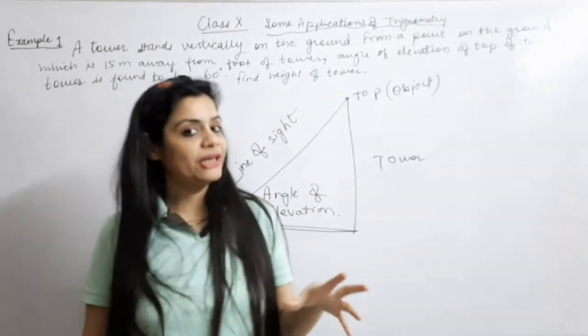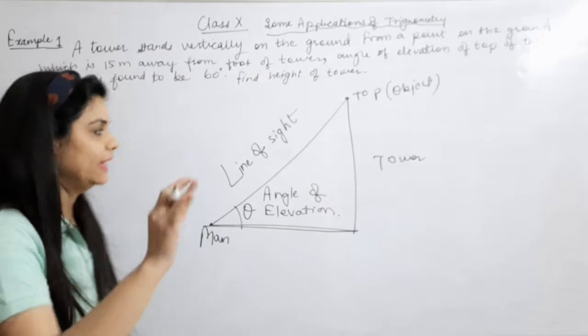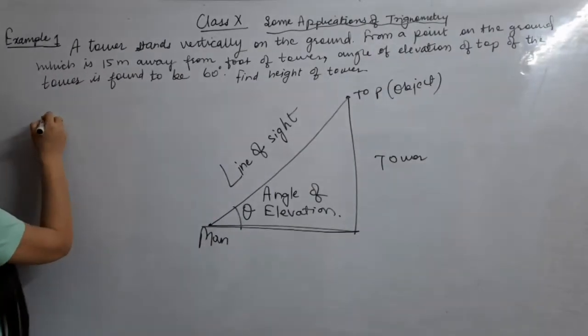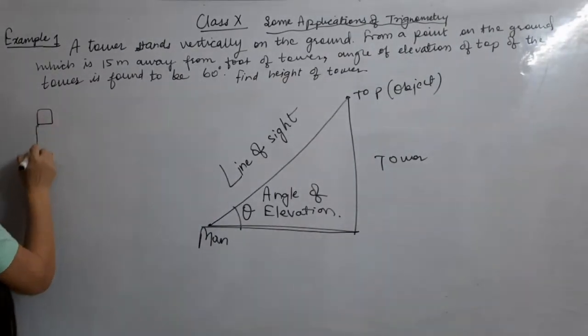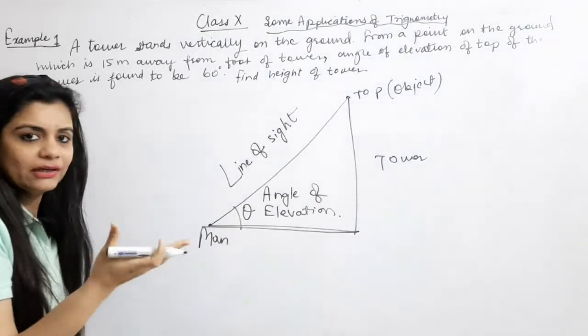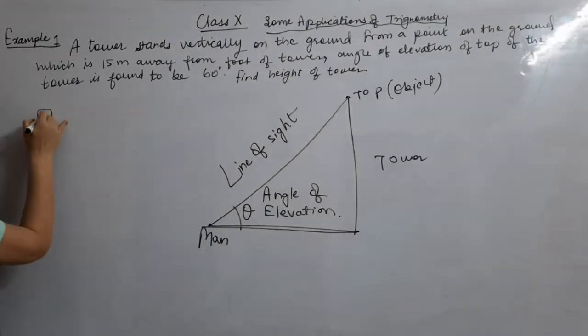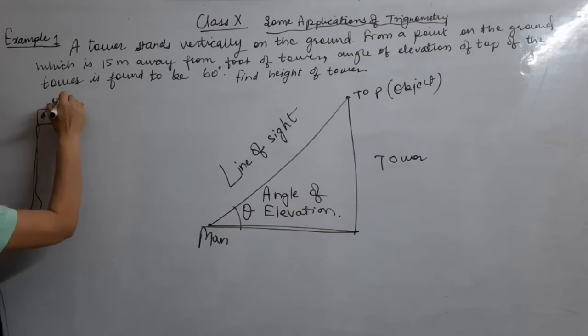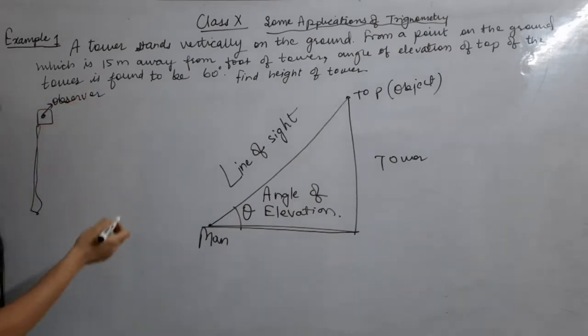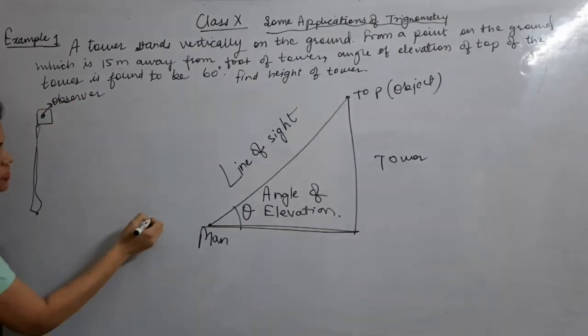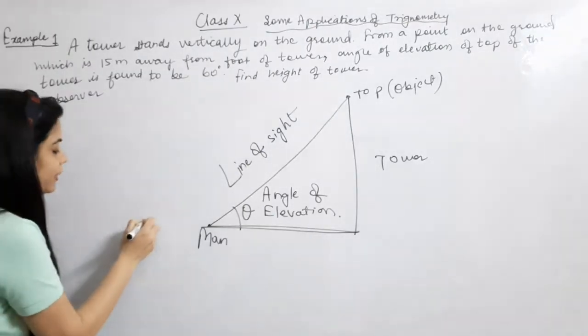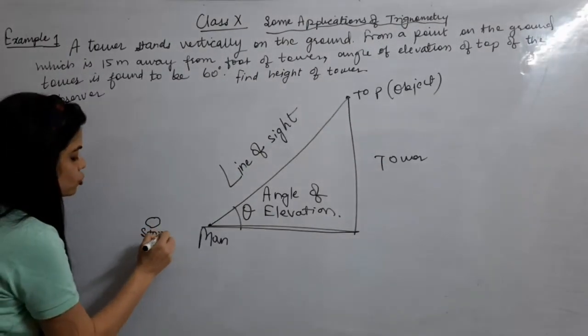Now, what happens in angle of depression? Now, the person is here, on top. This is a tower or whatever it may be. This is an observer, or person, or whatever, man. And object, or stone, like on the ground. This is a stone. Stone is on the ground.